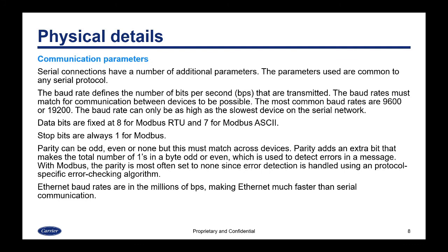Serial connections have a number of additional parameters common to any serial protocol. The baud rate defines the number of bits per second that are transmitted. Baud rates must match for communication between devices to be possible. The most common baud rates are 9600 or 19200. The baud rate can only be as high as the slowest device on the serial network.